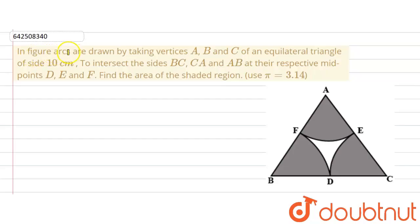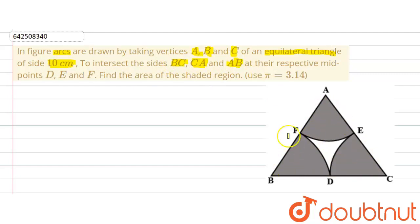The given question says that in the figure, arcs are drawn by taking vertices A, B and C of an equilateral triangle. The side of the equilateral triangle is 10 cm, and the arcs intersect the sides BC, CA and AB at their respective midpoints D, E and F. Find the area of the shaded region.